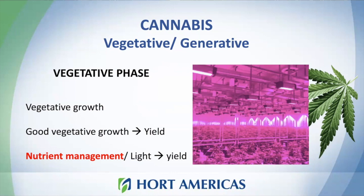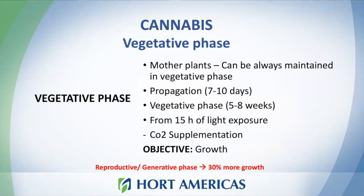This plant can take a lot of light. We will speak about best lighting options in a minute, but let's continue learning about the vegetative phase. In order to keep short day plants in vegetative phase we need to provide longer photoperiods, higher than 15 hours. Usually vegetative phase is maintained for five to eight weeks. Nutrition, light, and all parameters that can have a good impact in yield should have all our attention at this stage.